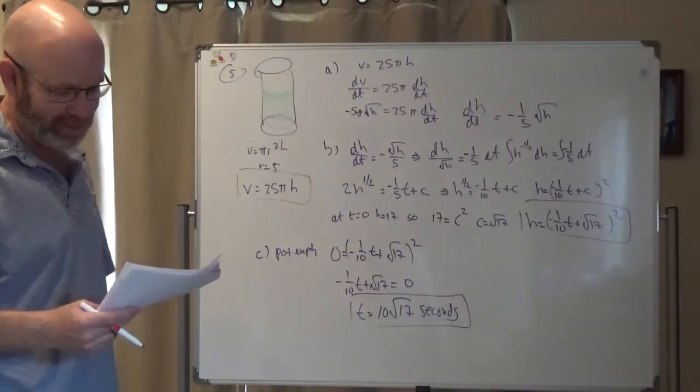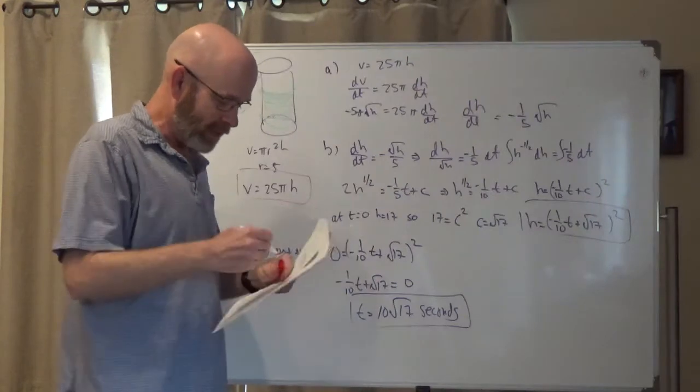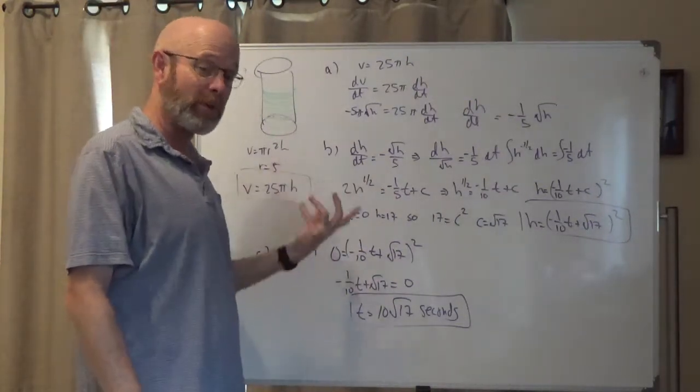The next question says, let's solve a differential equation. So we got dh/dt equals negative h over root five, and they gave me an initial condition. So this is a separable differential equation.